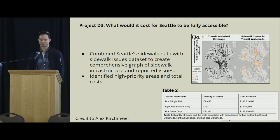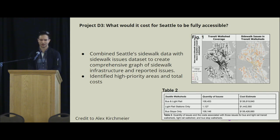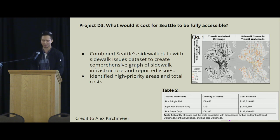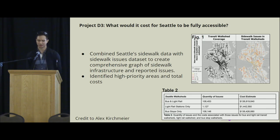A third project analyzed how much it would cost Seattle to be fully accessible. Students used Seattle sidewalks data to identify high-priority areas based on Seattle's sidewalk issues dataset, to find how many issues were related to the transit system and sidewalks, and generated cost estimates to repair these that were presented to the agencies in charge.